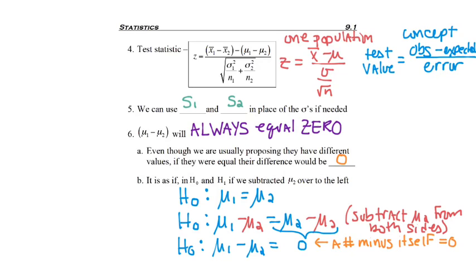5 minus 5 is 0. 19 minus 19 is 0. Negative 3 minus negative 3 is 0. But what we need to know is that means we will always use 0 for mu1 minus mu2 in the test statistic.